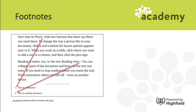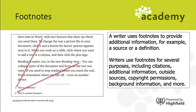A footnote is the small text found at the very bottom of a page, indicated by superscript numbers or an asterisk symbol. Footnotes provide additional information such as a source or a definition. Writers use footnotes for several purposes: citations indicating where information was found, additional background information, copyright permissions, or definitions. There are lots of different reasons a writer might use a footnote.